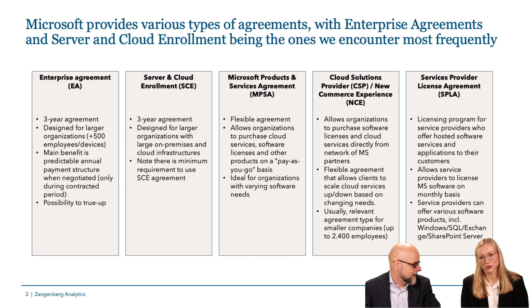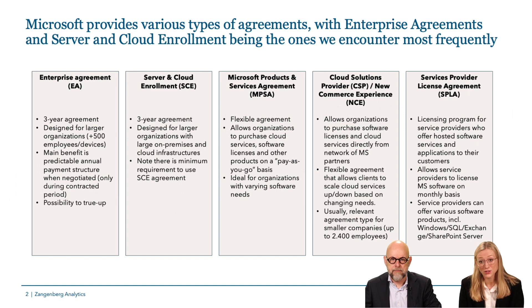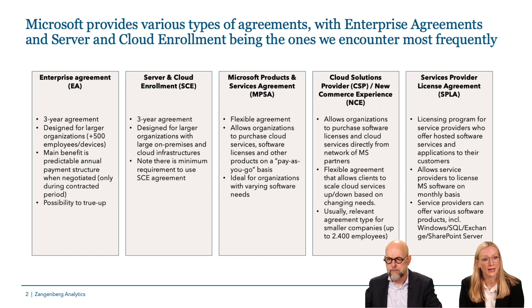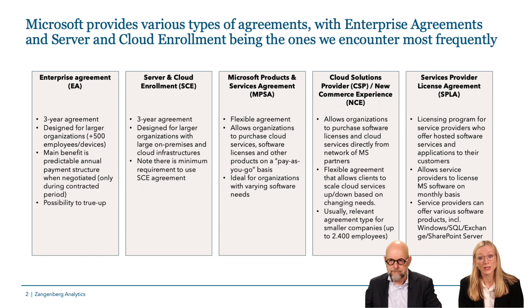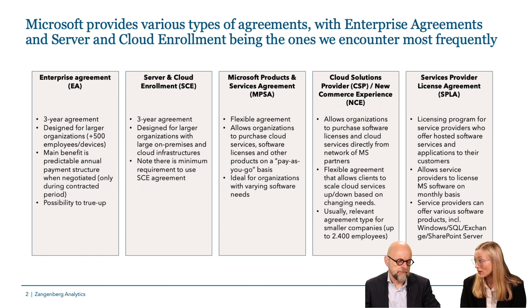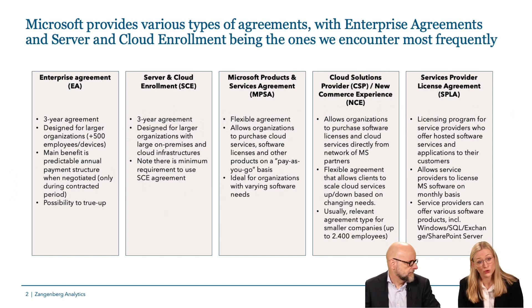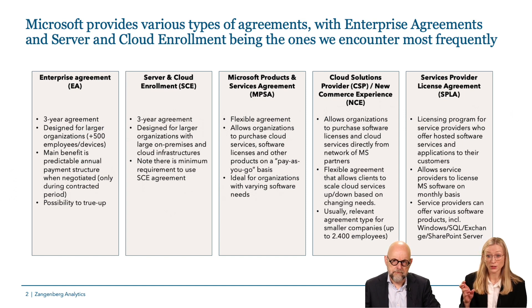First of all, Microsoft is not just Microsoft — there are several agreement types. Even though this webinar mainly focuses on EA and SCE negotiation, we want to briefly touch upon the different agreement types Microsoft offers. The EA is a three-year agreement designed for larger organizations, which is what we most often see our clients have, together with the SCE — the Server and Cloud Enrollment — where you buy cloud infrastructure and server products.